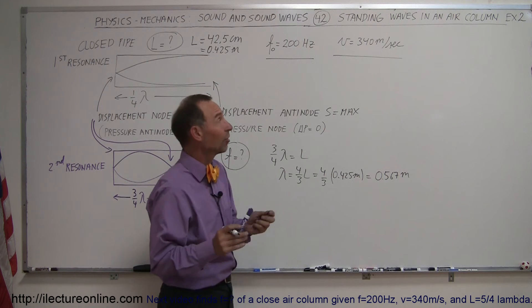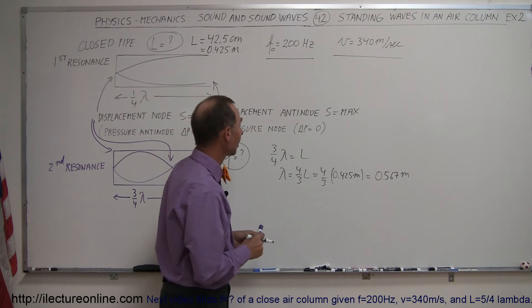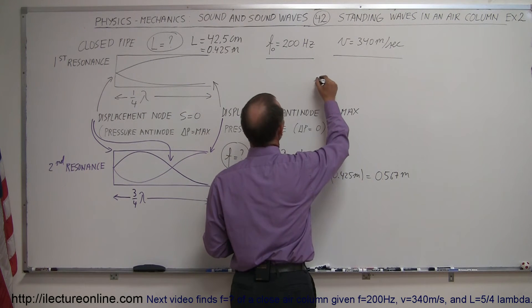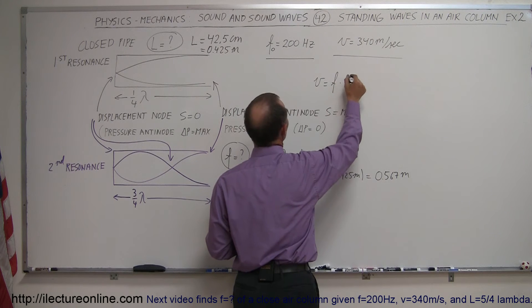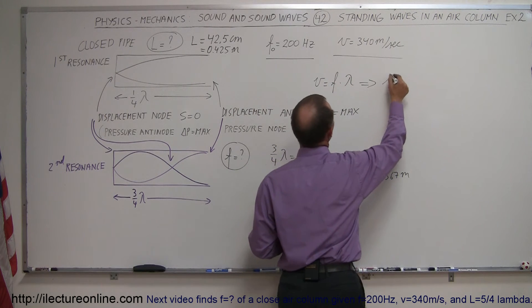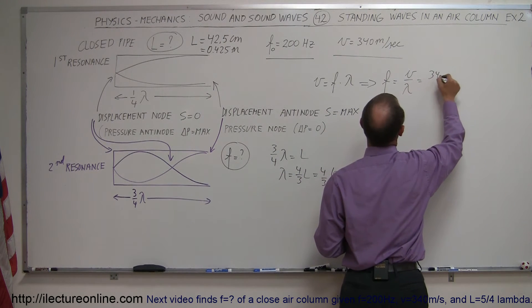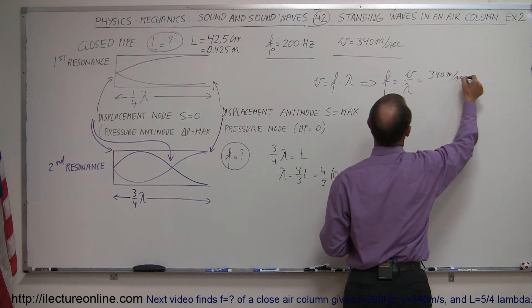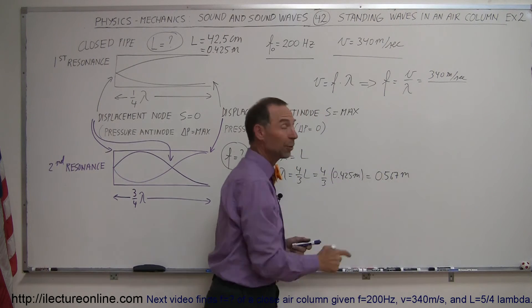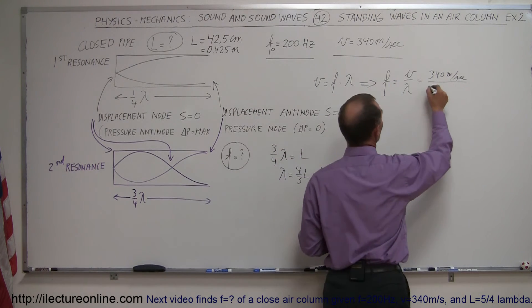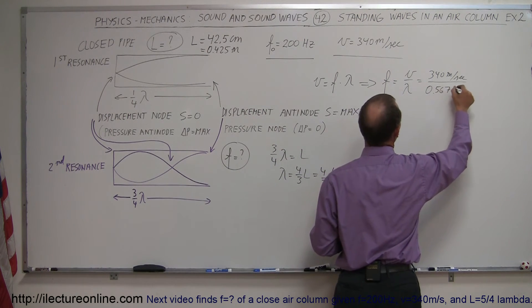Now the velocity of sound doesn't change, it's still 340 meters per second. So using the equation that the velocity is equal to the frequency times the wavelength, which means that the frequency is therefore equal to the velocity divided by the wavelength. Velocity is 340 meters per second, and the wavelength the way we found here was 0.567 meters.